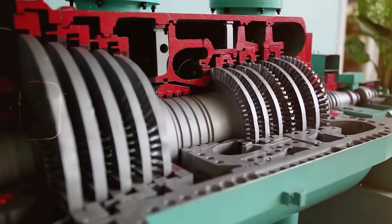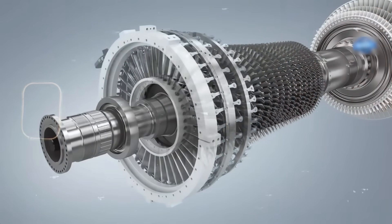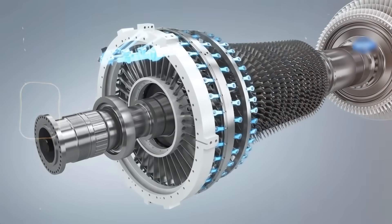His aluminum discs, stamped and assembled by hand, echo Tesla's original vision. Efficient motion born not from impact, but from interaction.